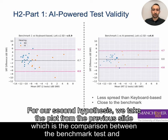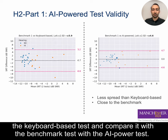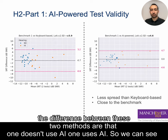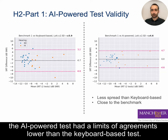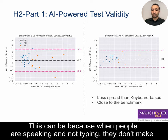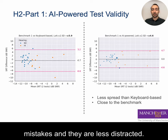For our second hypothesis, we take the comparison between the benchmark test and the keyboard-based test and compare it with the benchmark test versus the AI-powered test — the difference being that one does not use AI and one does — so we can see the effect of adding AI. The average is again close to zero, and actually the AI-powered test has a lower limit of agreement than the keyboard-based test, which may be because when people speak rather than type they make fewer mistakes and are less distracted.